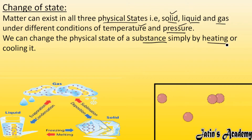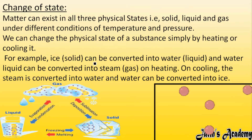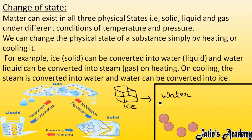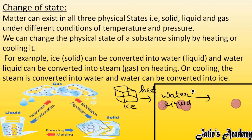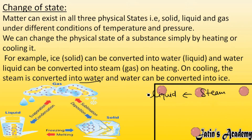We can change the physical state of a solid by either heating it or cooling it. For example, ice (solid) can be converted into liquid water by giving it heat. If ice is kept at room temperature, it absorbs heat from the environment and converts into water. On further heating, water boils and changes into gaseous steam. On cooling, steam converts back into water, and further cooling converts water into solid ice.